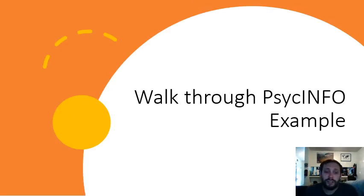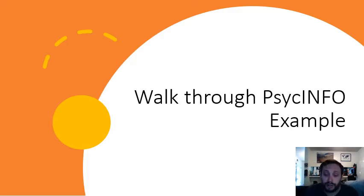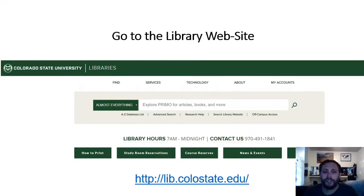Today we're going to walk through a PsychInfo example. I hope this gets you through an example so that you can perform your own psychological literature review to get primary sources on your subject content area, whether that's cognitive dissonance, social identity theory, social learning theory, or social comparison theory. The first thing you'll do is go to the library website, making sure you're logged in with your student ID.